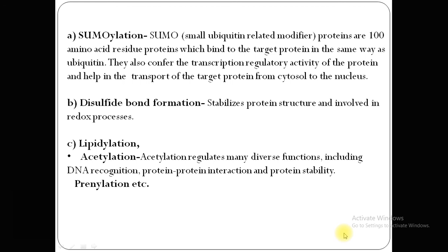Disulfide bond formation, as the name suggests, stabilizes protein structure and involves a redox process. Disulfide bonds are mainly formed between the sulfur atoms of two cysteine residues during the biosynthesis of protein in the cell. Disulfide bonds are important in protein folding as they play a significant role in both protein structure and protein function. Acetylation regulates many diverse functions including DNA recognition, protein-protein interaction, and protein stability.